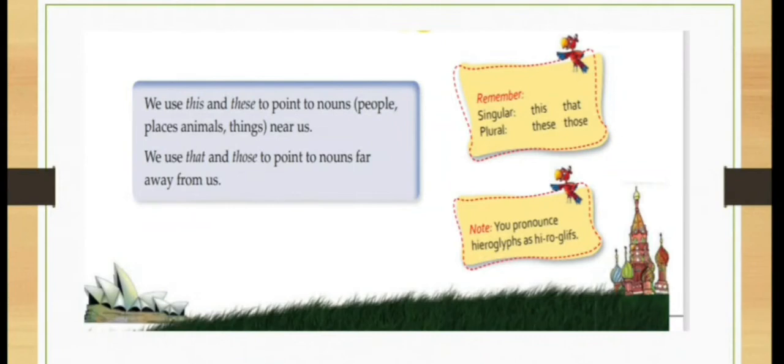We use this and these to point to nouns: people, place, animal, things near us. So if anything which is near to us, we will use this and these. If anything which is far from us, we will use that and those. Whenever it is singular, we will use this. If it is plural, we will use these. Whenever it is singular, we will use that and whenever it is plural, we will use those.